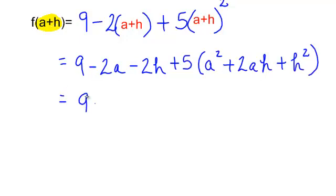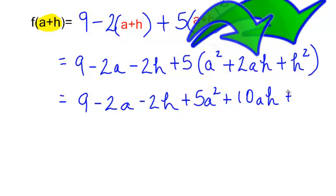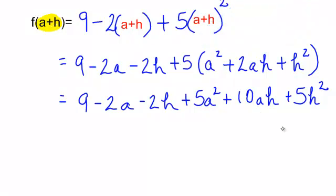I have more distributive property to do. I will multiply 5 times this trinomial. It will be 5a squared plus 10ah plus 5h squared. Do we have any like terms? No, we don't. That is f at a plus h.